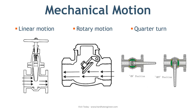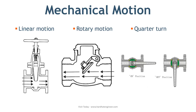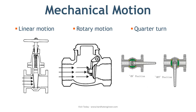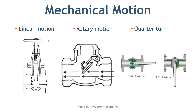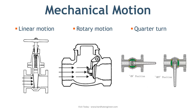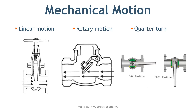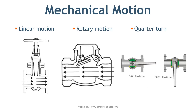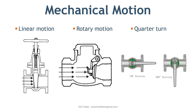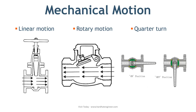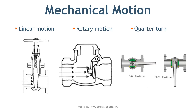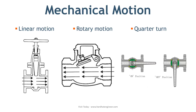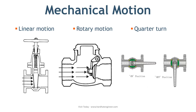In rotary motion valves, a closure member travels along an angular or circular path, as in butterfly, ball, plug, and swing check valves. Some rotary motion valves require approximately a quarter turn — that is, 0 through 90 degrees of motion — to go from fully closed to fully open, or otherwise.